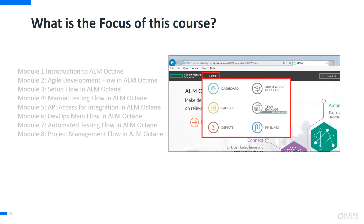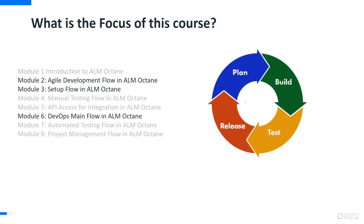The focus of this course is threefold. First, we begin with an introduction to the ALM Octane graphical user interface and the various modules available within the tool. We then explore the tool through the agile development methodology and process flow. Here you will discover how ALM Octane provides support for continuous integration and continuous deployment, helping to accelerate your DevOps approach and more rapidly build effective solutions.